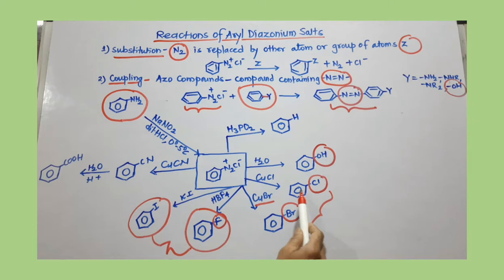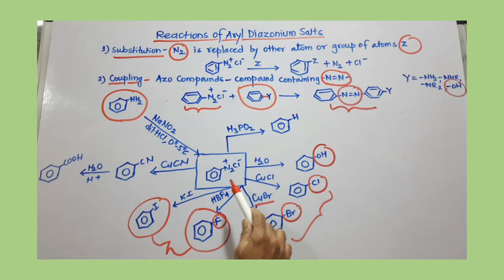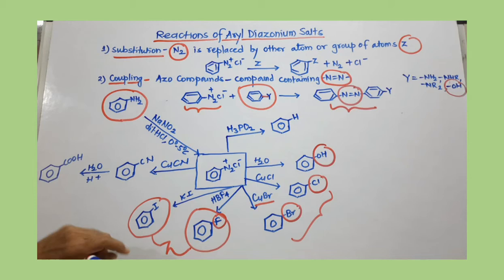Chlorobenzene and bromobenzene can also be prepared by direct chlorination and bromination, but there are certain limitations. To avoid those limitations, you can adapt the diazonium salt procedure. This demonstrates the versatility of aryl diazonium salts.